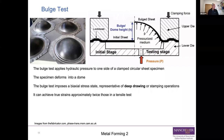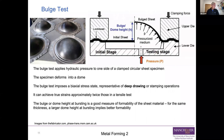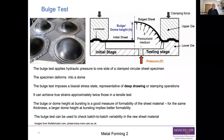The bulge test is useful because it can achieve true strains approximately twice those in a tensile test, since biaxial loading is more stable against neck formation than uniaxial tension. We can use the dome height at bursting as a measure of formability — a crude measure of how much deformation you can put in before it breaks. For the same thickness of material, a larger dome height at bursting implies better formability, so you can rank materials by formability. The test can also check batch-to-batch variability in raw sheet material — very useful to confirm that material meets specification before committing to a production run of deep-drawn components.